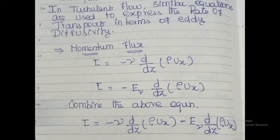What is turbulent flow? Turbulent flow is a zigzag flow or irregular flow, where Reynolds number is greater than 4000. Turbulent flow is faster than laminar flow, or it is in contrast to laminar flow.